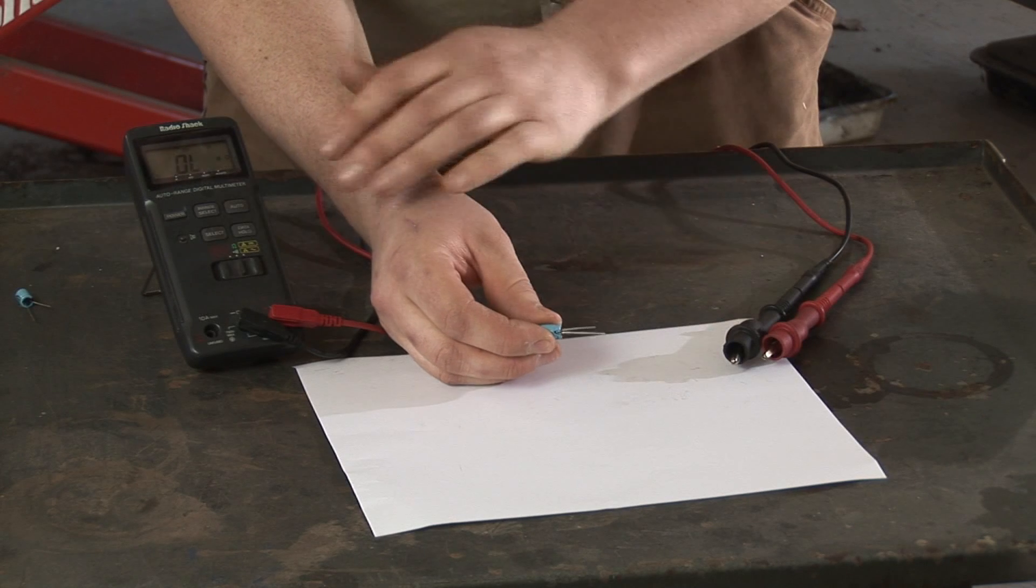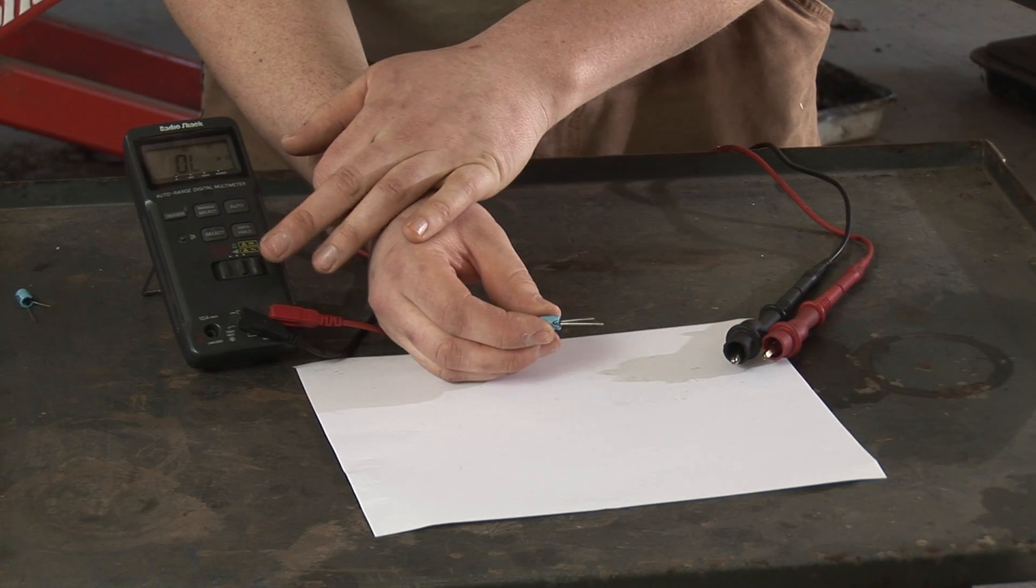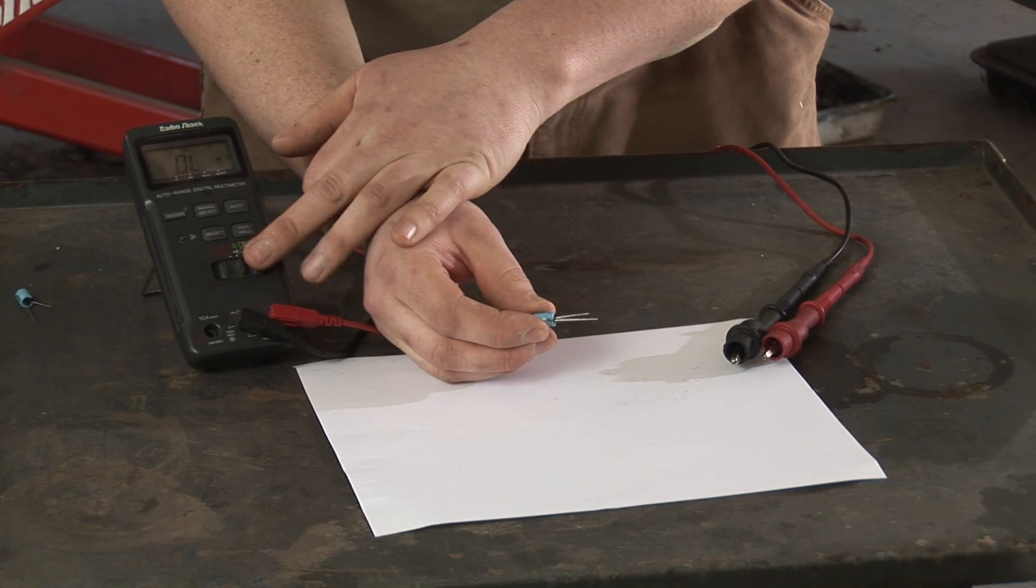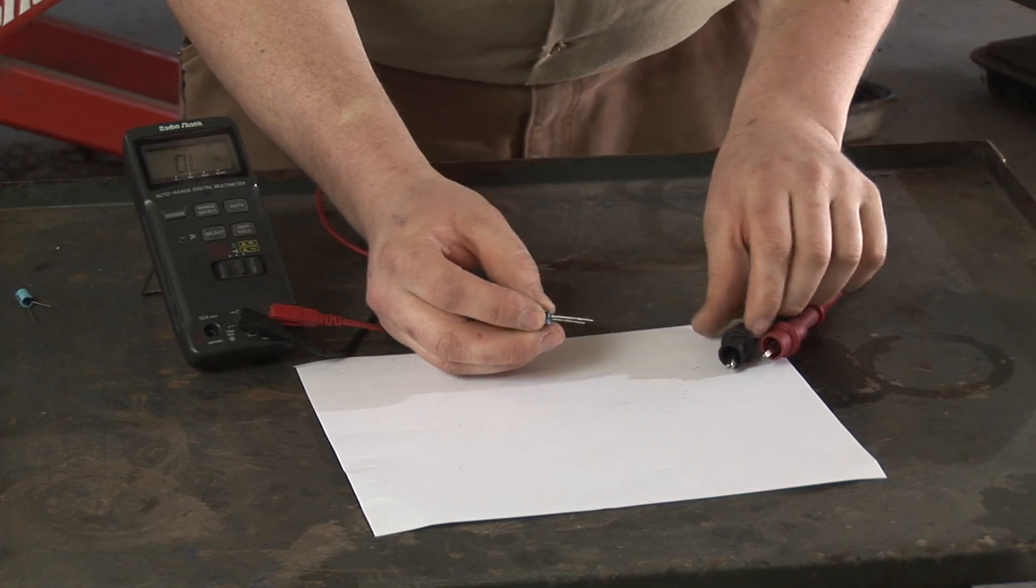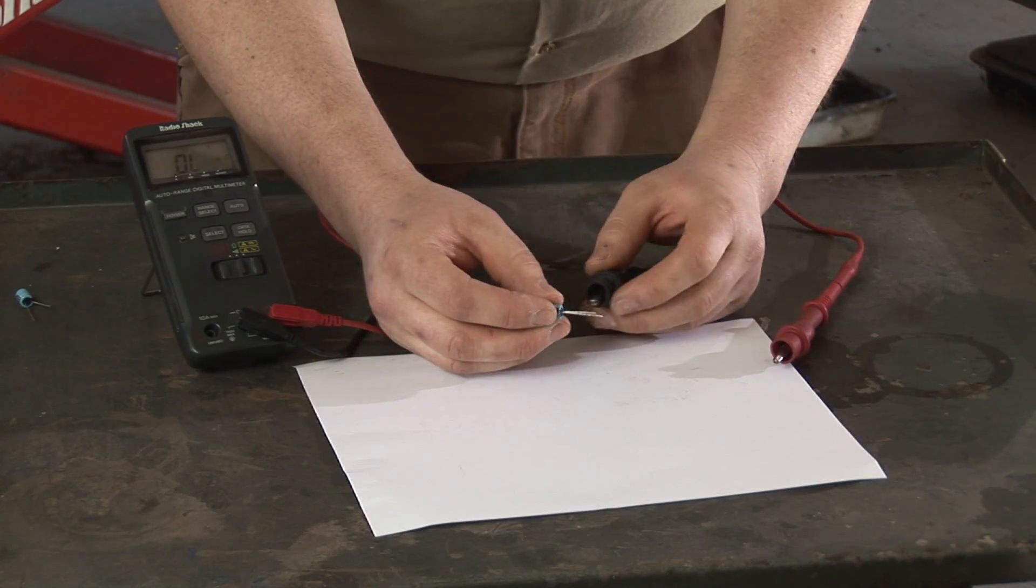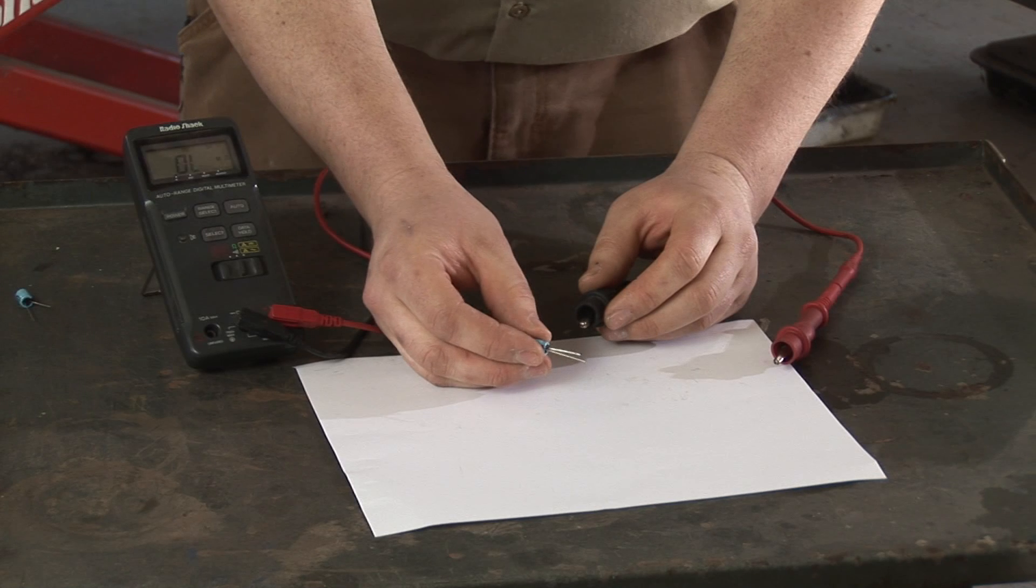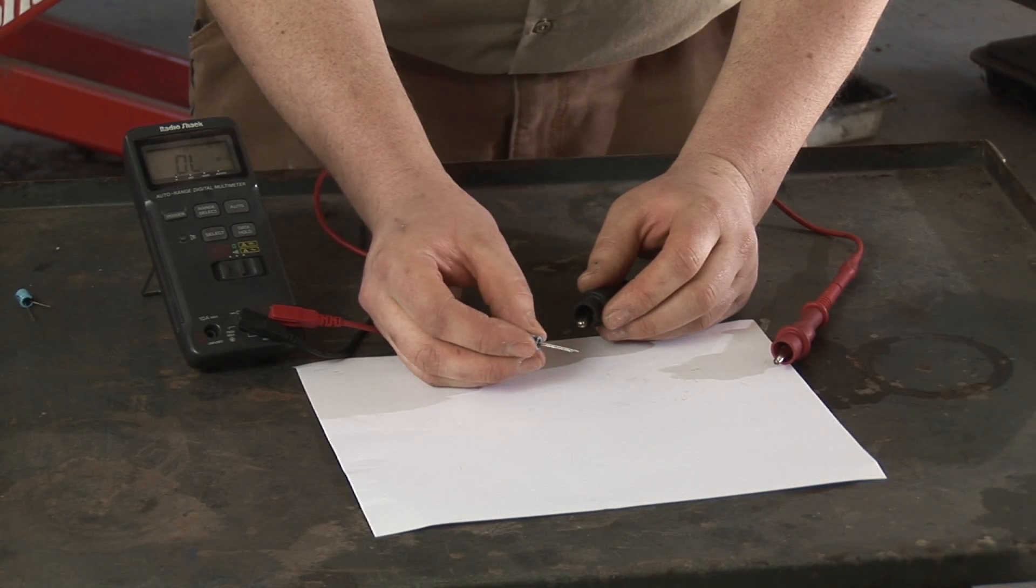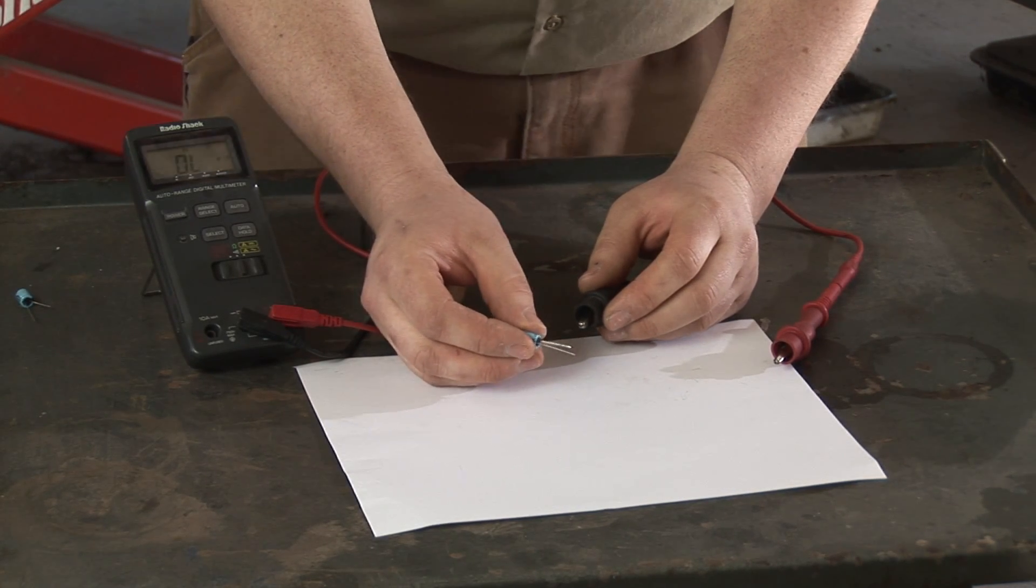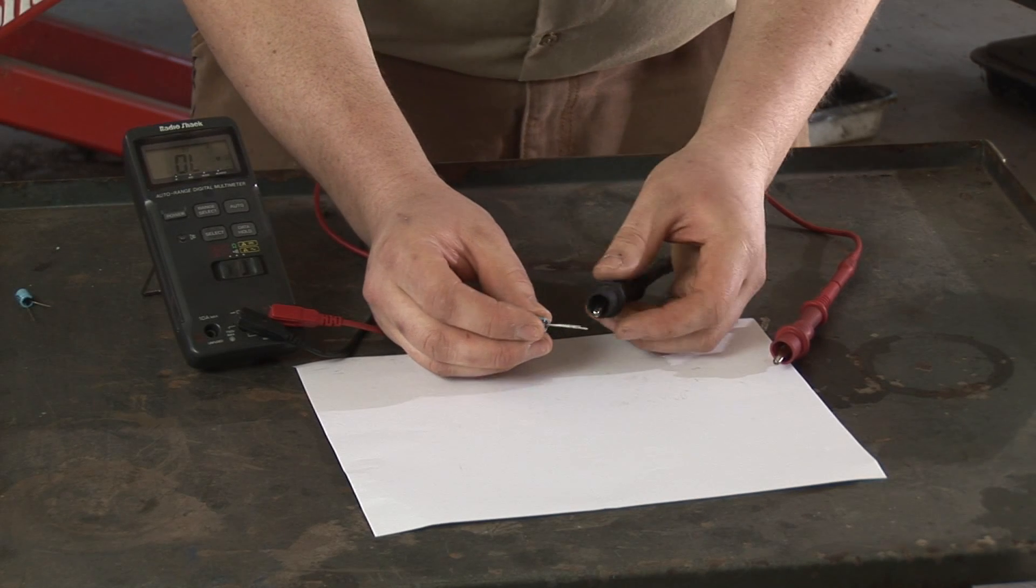In order to test a capacitor, you want to put your multimeter into resistance mode, ohms, and you want to make sure that it's fully discharged by drawing the power off of it.